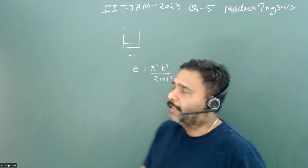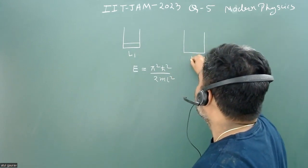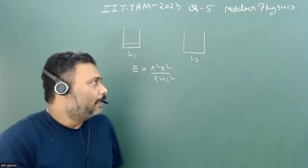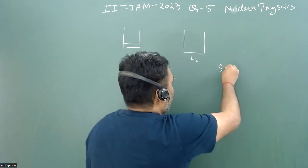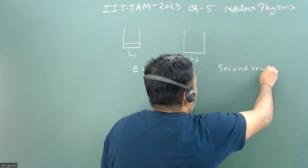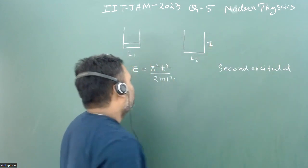There is another particle in another box with width L2, and this E is equivalent to the second excited state of the second box.